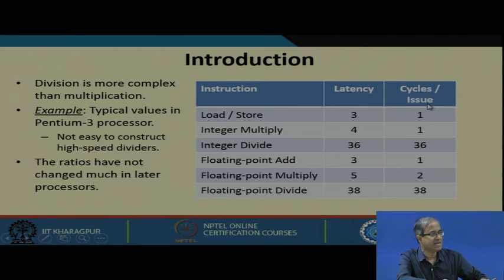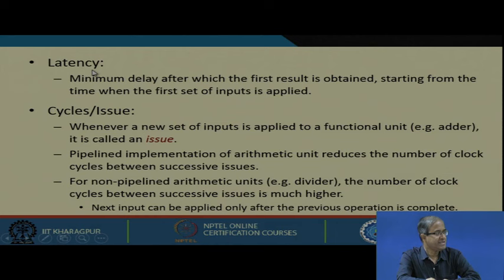Let us look at what we mean by latency and cycles per issue. Latency refers to the minimum delay starting from the time when the first set of inputs is applied up to which the first result is obtained. So latency talks about just the initial delay - the delay for the first time. Suppose I have a circuit, it can be an adder, multiplier, or divider - I apply a set of inputs and ask: after how much time do I get my result? This time duration is called latency.